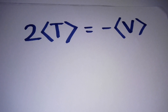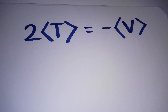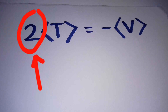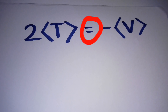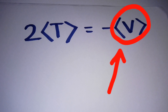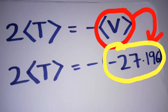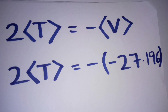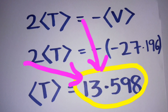Now let us find the value for kinetic energy. We know from the relation that twice the expectation value of kinetic energy is equal to the negative expectation value of potential energy. After substituting the value of potential energy and solving, we get the expectation value of kinetic energy equal to positive 13.598 electron volt.